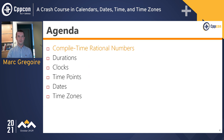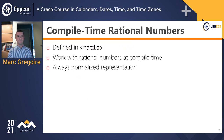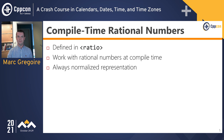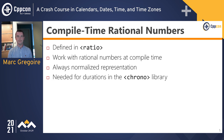Let's start with compile-time rational numbers. They are defined in the ratio header and allow you to handle rational numbers at compile time. The numerator and denominator are always compile-time constants and are stored in a normalized representation. We will need these during the discussion of durations in the Chrono Library.